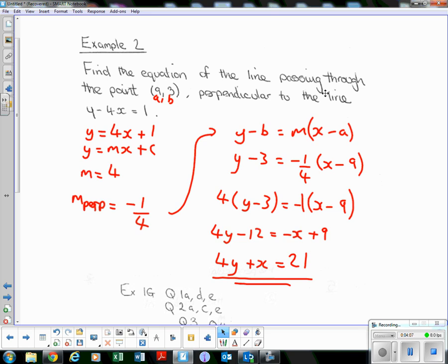We're asked for the perpendicular gradient, so flip the 4 to get 1/4, change the sign to negative 1/4. Now we've got the gradient of the perpendicular line and we've got (9, 3) which is a point on that line. Substitute in, written a and b underneath here just so I don't put them in the wrong order. So y minus 3 equals negative 1/4 bracket x minus 9.